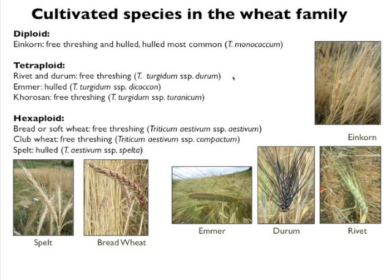The tetraploid species include Durham wheat or rivet, which are the same species but have different agronomic and quality traits; emmer, which is also hulled like einkorn and needs to be de-hulled before being used as food; and Khorasan, which is known in the states under the trademark variety name Kamut.